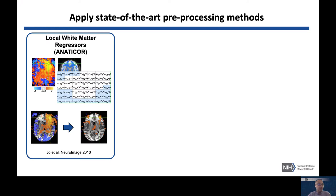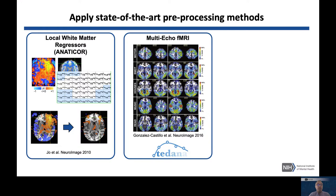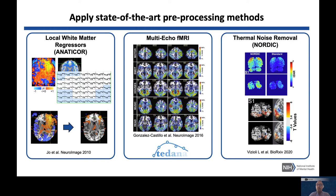There are methods we can apply to pre-existing data, like the Anaticor method, which uses local white matter regressors to search for potential coil instabilities and remove them. If you're planning new experiments, you might consider acquiring multi-echo fMRI, which automatically separates BOLD and non-BOLD parts of the signal — resources are available at the TEDxANA website. You might also consider the Nordic technique, which removes a significant amount of thermal noise, though it requires acquiring data with both phase and magnitude.